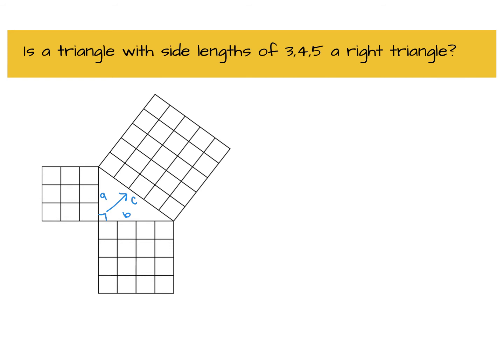And what we want to prove is that A squared plus B squared is equal to C squared. And we can actually count them here because we have 1, 2, 3, 4, 5, 6, 7, 8, 9.